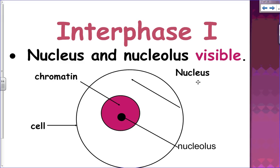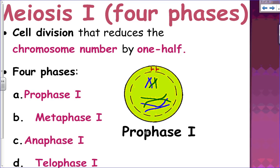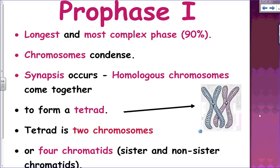In interphase one, the nucleus and nucleolus are visible within the cell. Meiosis one has four phases and is the cell division that reduces the chromosome number by half. Those four phases are prophase one, metaphase one, anaphase one, and telophase one. Prophase one is the longest and most complex phase of meiosis — chromosomes condense, and something different from mitosis occurs.